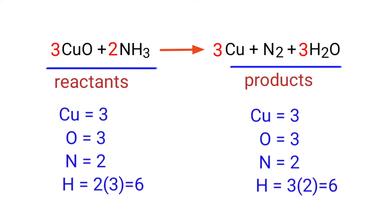The equation is now balanced. There are 3 Copper atoms, 3 Oxide atoms, 2 Nitrogen atoms, and 6 Hydrogen atoms on both sides.